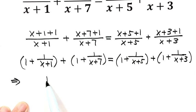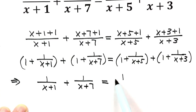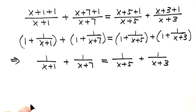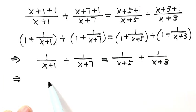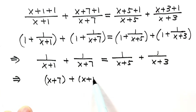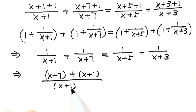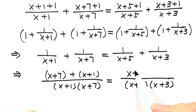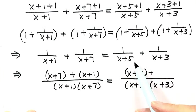After canceling, we have: 1/(x+1) + 1/(x+7) = 1/(x+5) + 1/(x+3). For the left-hand side, combine the two fractions using a common denominator: the numerator becomes (x+7) + (x+1), and the denominator is (x+1)(x+7). For the right-hand side, the common denominator is (x+5)(x+3), with numerator (x+3) + (x+5).